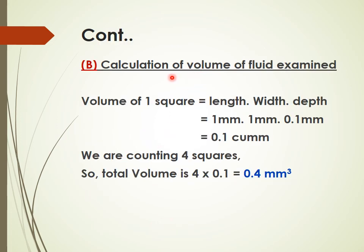The volume of one square is 1 mm length × 1 mm width × 0.1 mm depth, giving a volume of 0.1 cubic millimeter. Since we count four squares, the total volume is 4 × 0.1 = 0.4 cubic millimeter.